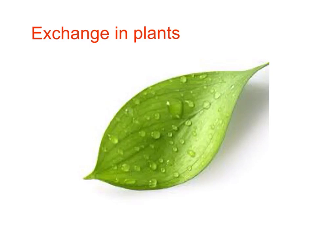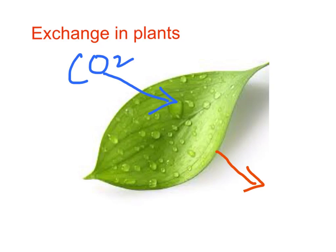The organs of exchange in plants are leaves. During the day, they take in carbon dioxide from the surrounding air and give out oxygen. The gas exchange taking place during the day in a plant is the reverse of what's happening in the lungs. The leaves take in carbon dioxide, which is used for photosynthesis, and they give out oxygen.